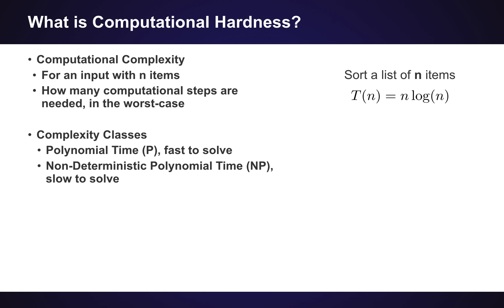So given this kind of functional formalism for how long it takes to compute things, different complexity classes have been developed. One of the biggest ones is called polynomial time or P, and these are widely accepted to be what we would say fast to solve. Then there are problems in another popular class called non-deterministic polynomial time, which is NP, which generally we would say are slow to solve or impractical to solve because the runtime is usually exponential in the input.